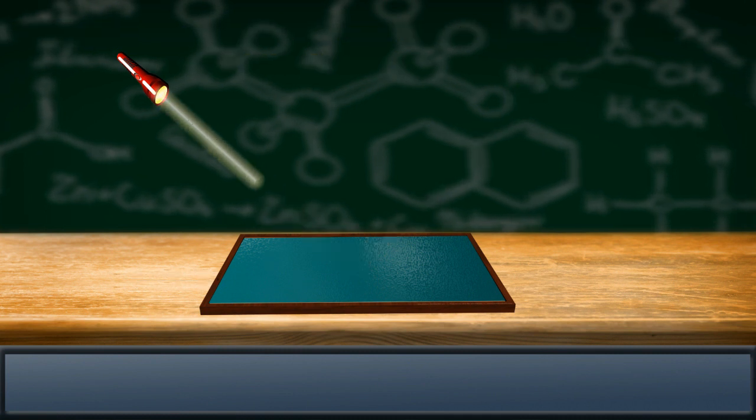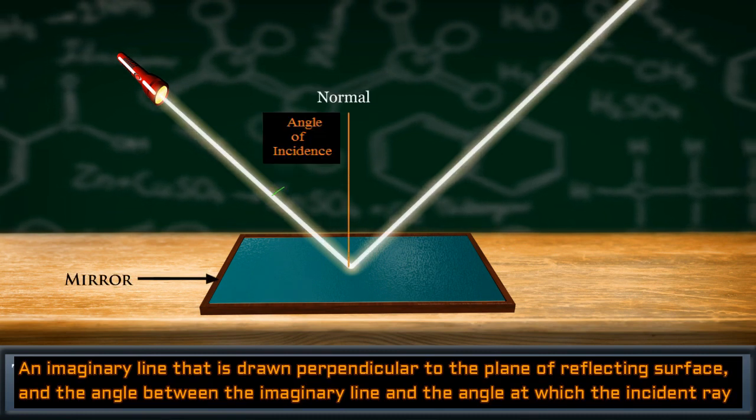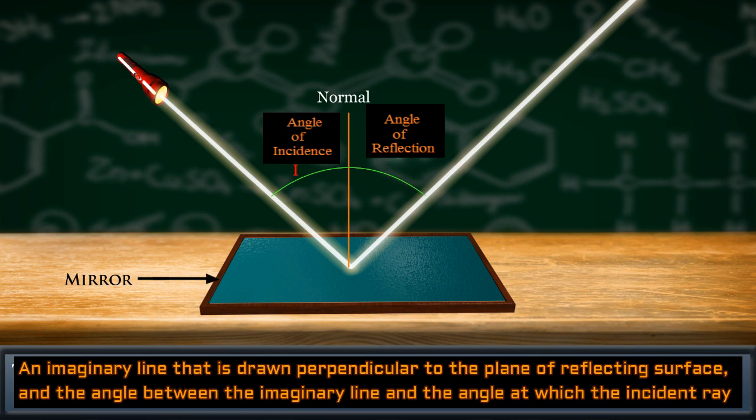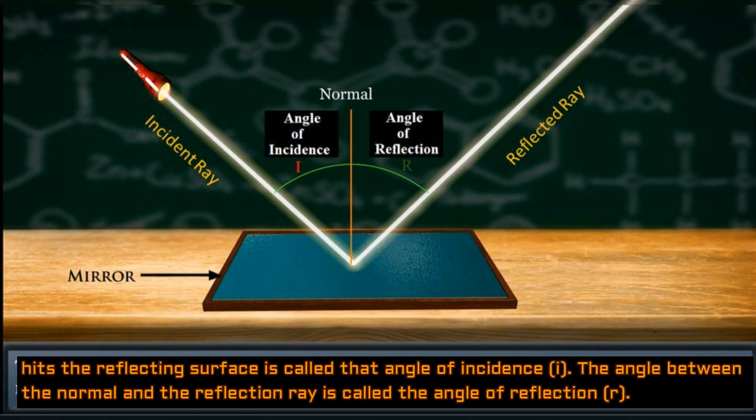The point at which the light ray hits the reflecting surface is called the point of incidence. An imaginary line that is drawn perpendicular to the plane of the reflecting surface, and the angle between the imaginary line and the angle at which the incident ray hits the reflecting surface, is called the angle of incidence (I).